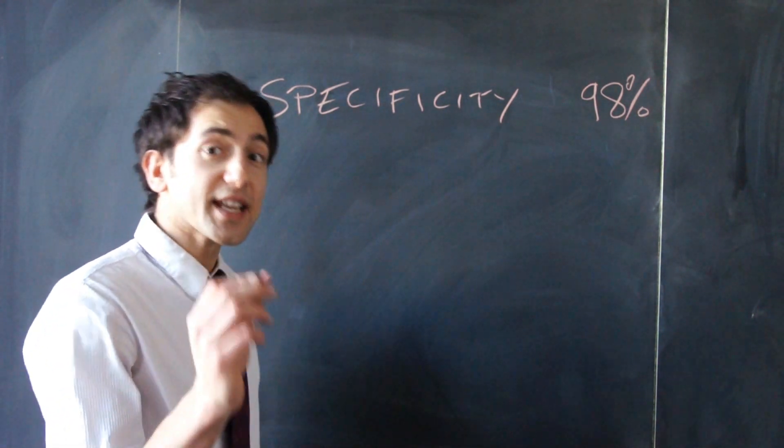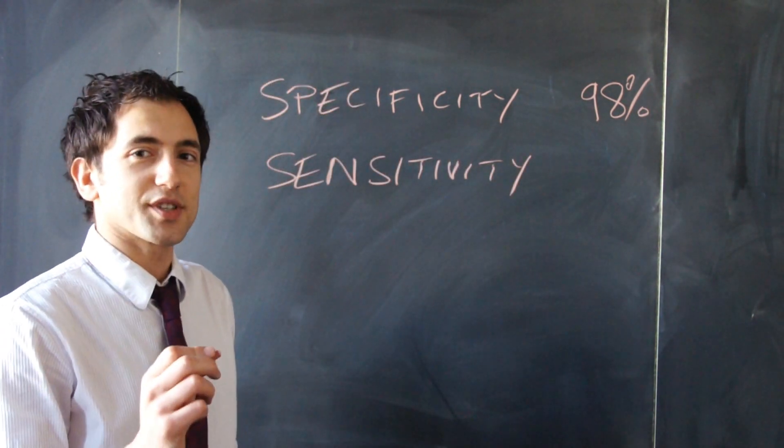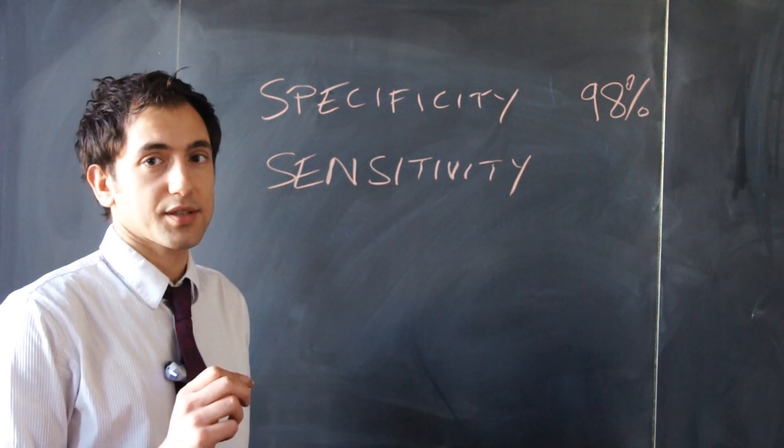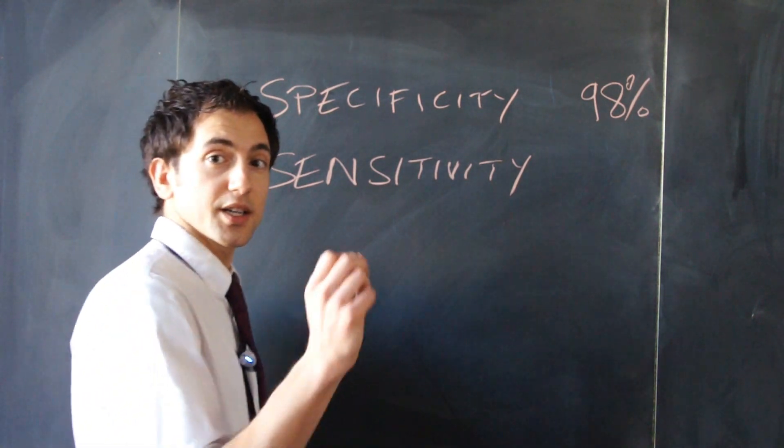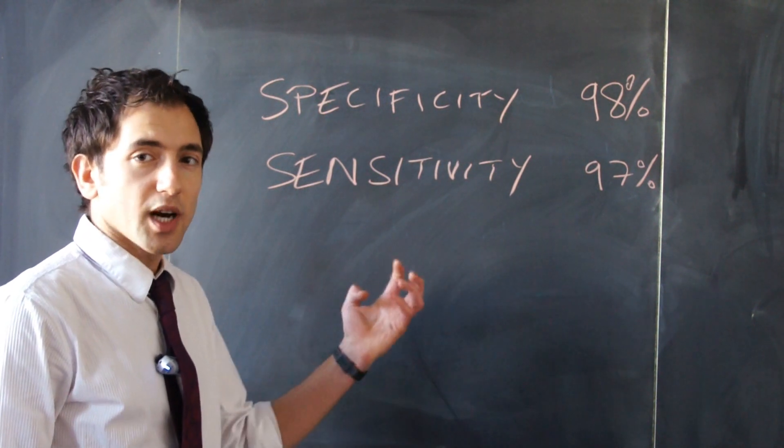A second important figure is the sensitivity of a test. This tells you what percentage of the time a test correctly identifies those who do have the disease. Here, it's again very high, 97%. So it looks like the test is incredibly reliable.